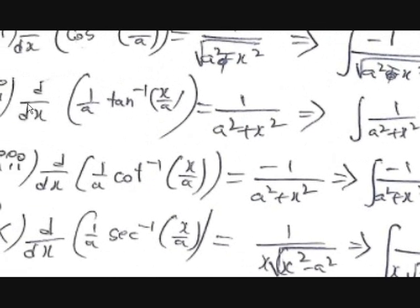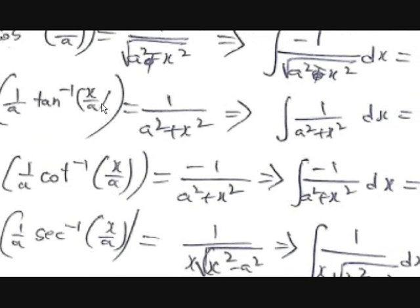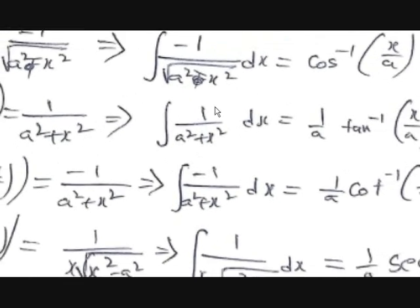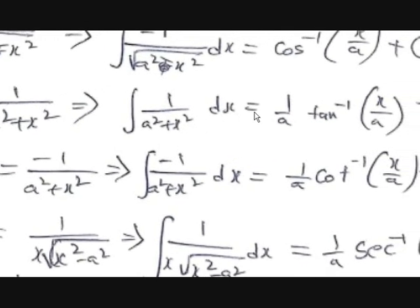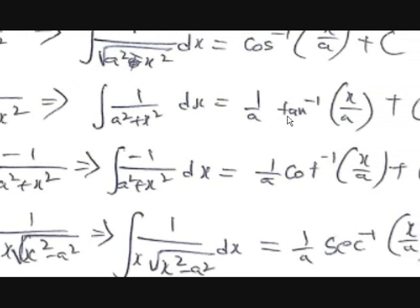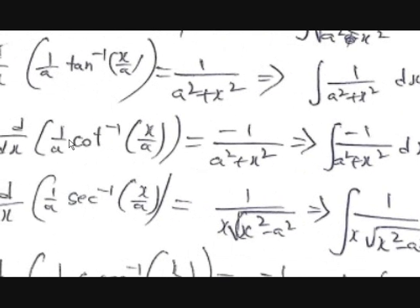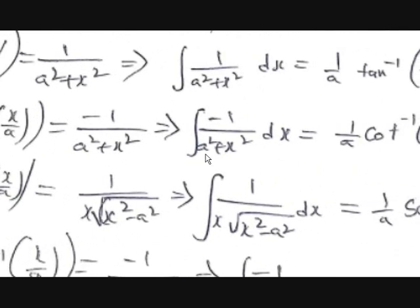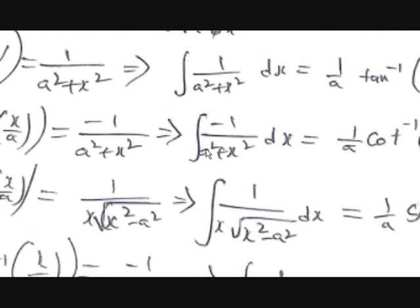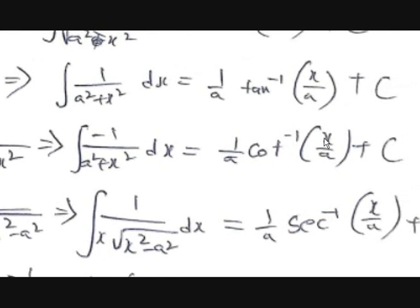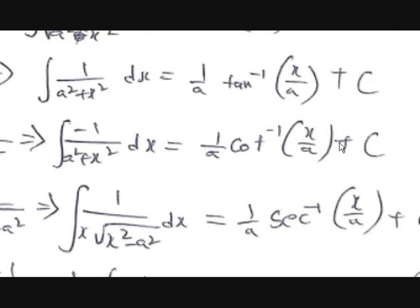Similarly, d/dx of (1/a) · tan⁻¹(x/a) equals 1 / (a² + x²), so the integral of 1 / (a² + x²) dx is equal to (1/a) · tan⁻¹(x/a) plus c. And the integral of −1 / (a² − x²) dx is equal to (1/a) · cot⁻¹(x/a) plus c.